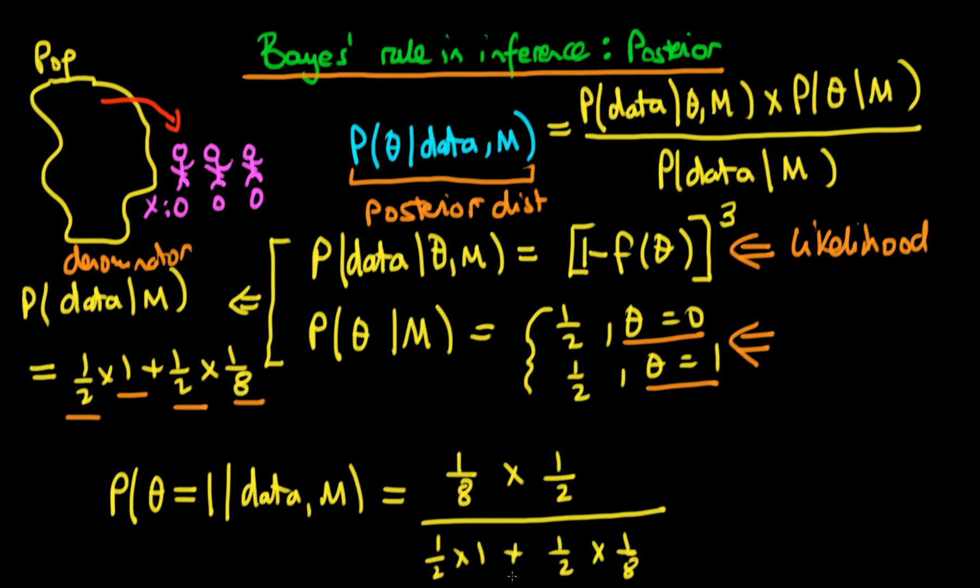So when you write it out in this form, you can see this sort of symmetry here, with this term on the top being the same as this term on the bottom. And if you work through here, you find that this is the same as one-sixteenth divided by nine-sixteenths, which is the same thing as one-ninth.